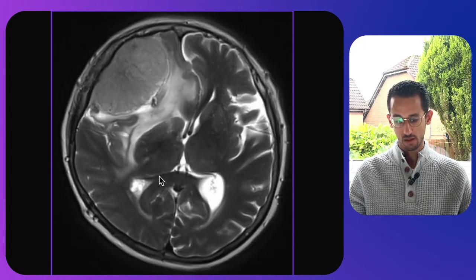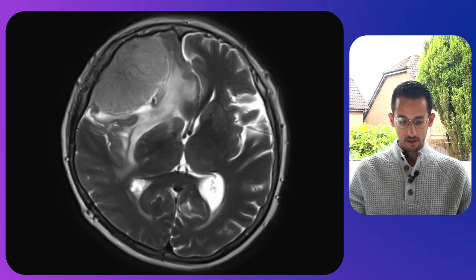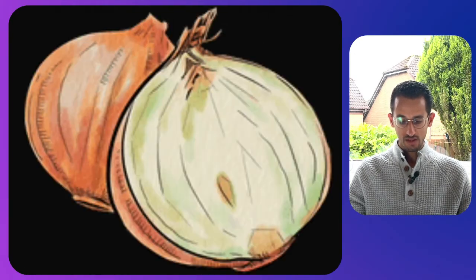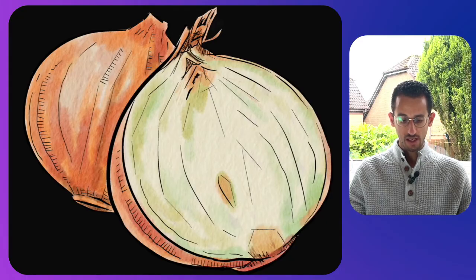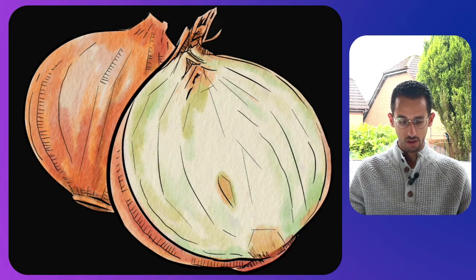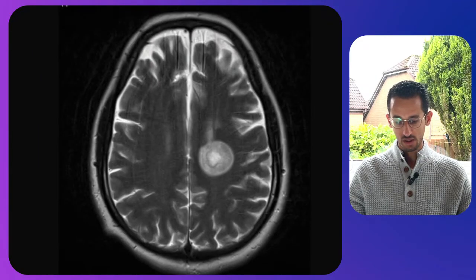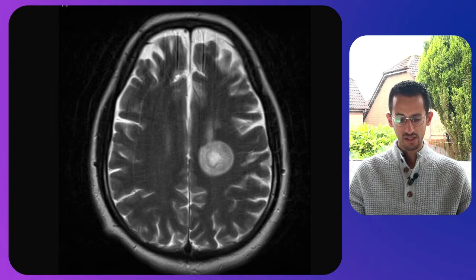The next one is the onion skin appearance, which can be seen in Balo's concentric sclerosis — like in this picture where you can see an onion peel appearance.